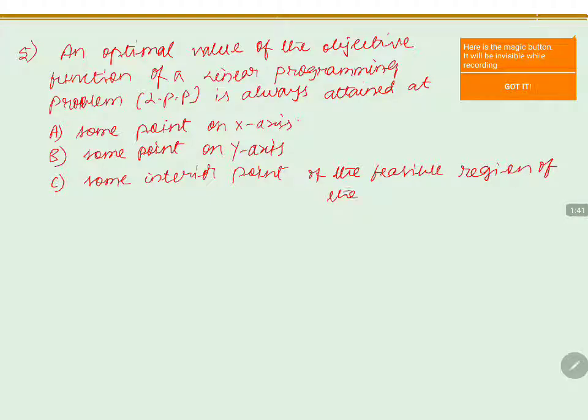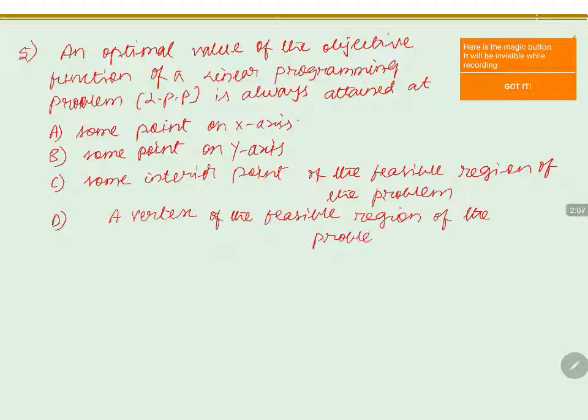Feasible region of the problem. The fourth option is a vertex of the visible region of the problem. These are the given options in the problem.